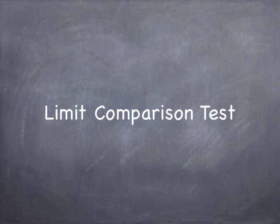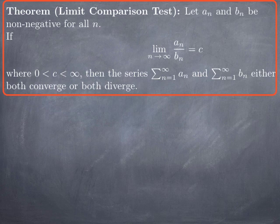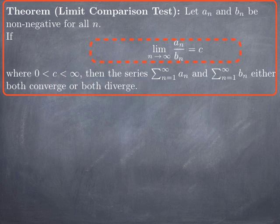We are going to turn directly to the statement of the result, which is that if we are looking at two series with non-negative terms — just like for direct comparison — we look at the limit of the quotient of the general terms. So we have on one end the series of a_n, on the other end the series of b_n. These are series with positive terms. We look at the terms of corresponding index, a_n over b_n, take the quotient and look at the limit when n goes to infinity.